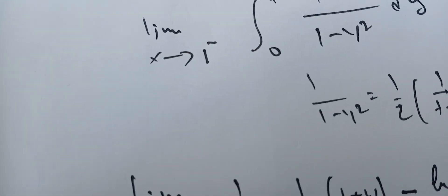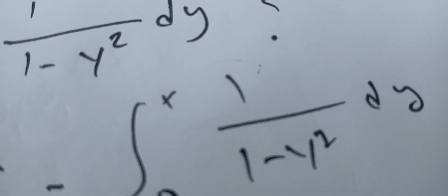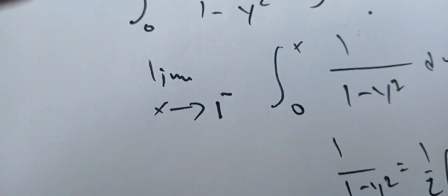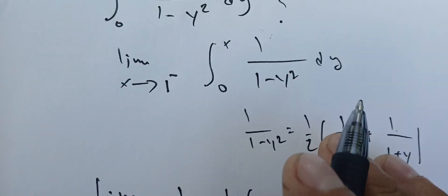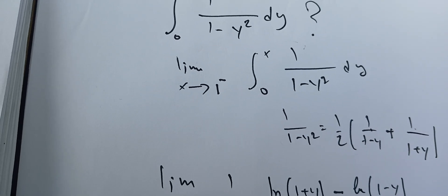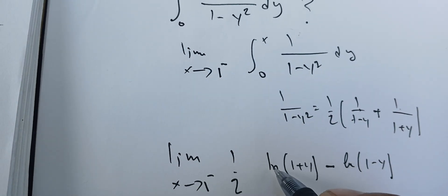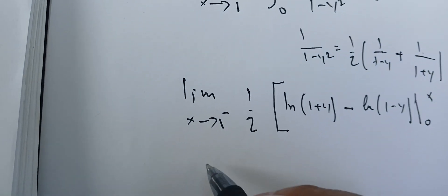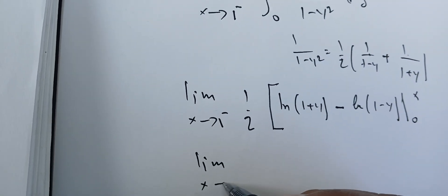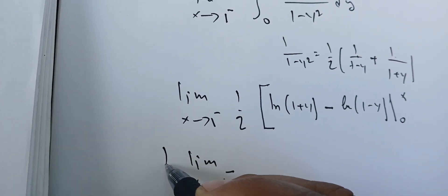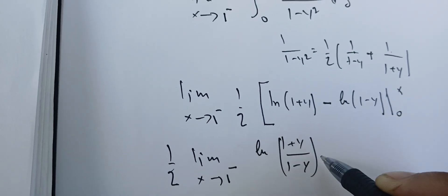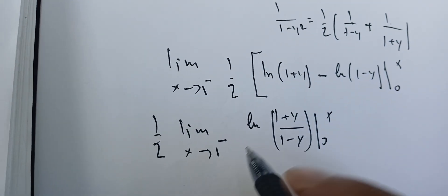With this one here, I'm left with only using the rules of the integral. I can take this one down, so I have the limit as x goes to 1 minus. Let's take this one half outside, so it's going to be the natural log of 1 plus y over 1 minus y between 0 and x before I take the limit.